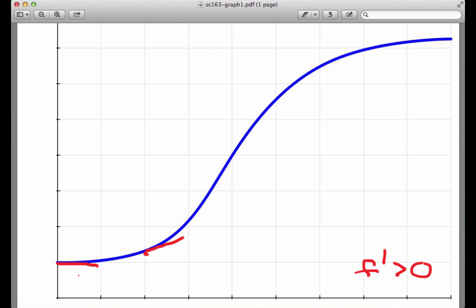If I moved over, let's say a couple of units, and put a tangent line there, the slope has increased. I've gone from pretty flat to a little more steep. And if I keep going over to the right, for a little ways at least, I see that my slopes are getting steeper and steeper and steeper.